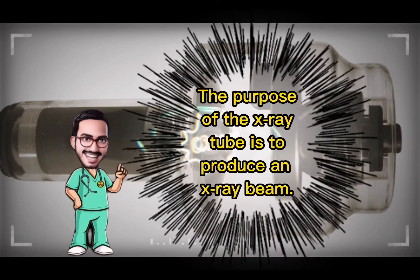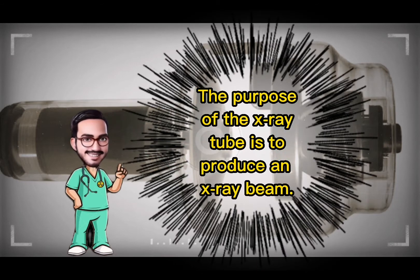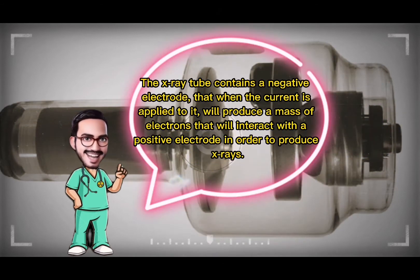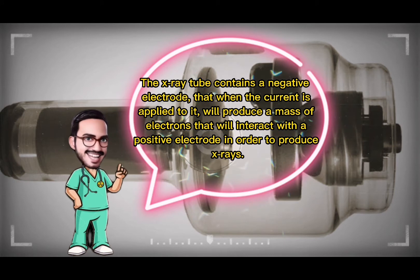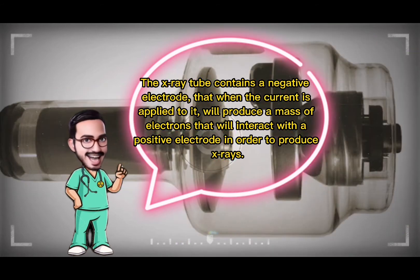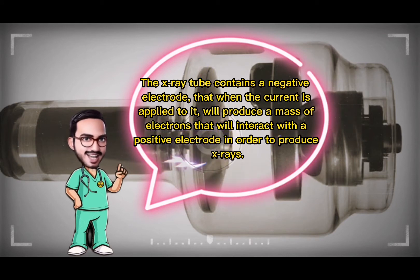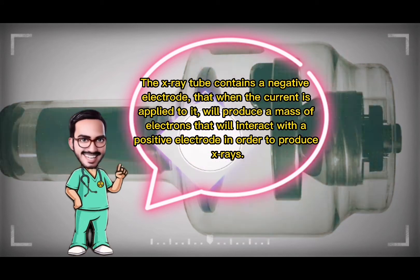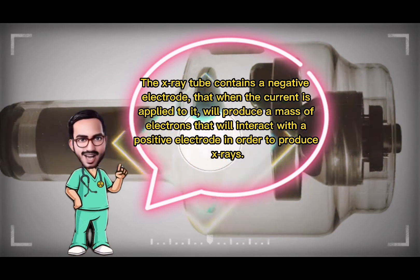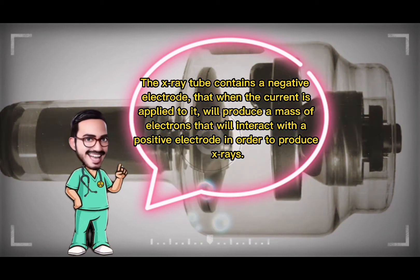The purpose of the x-ray tube is to produce an x-ray beam. The x-ray tube contains a negative electrode that, when current is applied to it, will produce a mass of electrons that will interact with the positive electrode in order to produce x-rays.